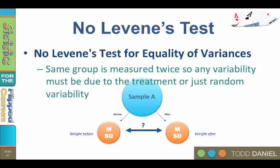Unlike the independent samples t-test, there is no assumption for homogeneity of variance with a paired samples t-test. In an independent samples t-test, some of the variability in each group may be affected not just by random differences but also by pre-existing differences between the groups, requiring a Levene's test. However, in a paired samples t-test there's no need to do a Levene's test because the same group is being measured twice — that group is drawn from a single population. We do not need to evaluate homogeneity of variance between two groups because we really have one group drawn from one population, and the random variability in that group is the same before and after; any change in variability is therefore due to the treatment.